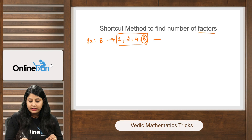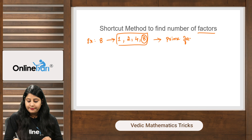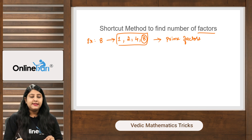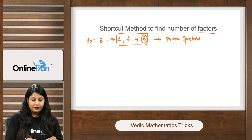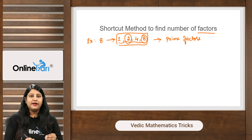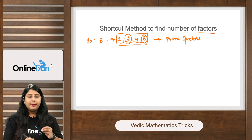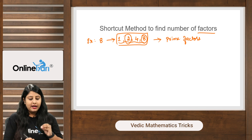Now one more thing to understand is prime factors. Prime factors are numbers which are both a factor and a prime number. Out of the 4 factors of 8, only 2 is a prime factor — it is both a prime number and a factor of 8.